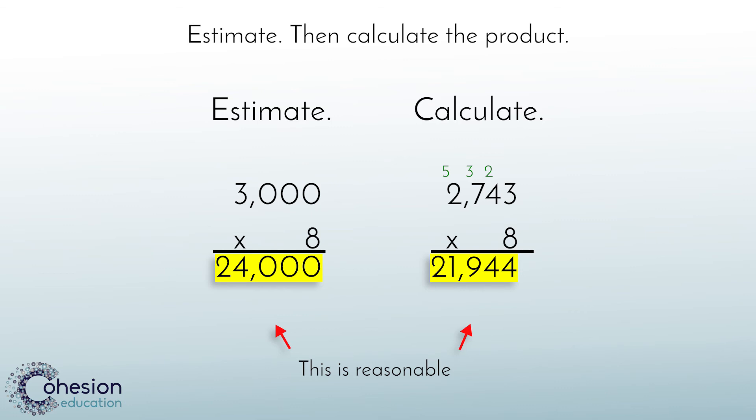This problem shows that it is important to rely on what we know about place value when working through each step of the problem. It is also very important to always remember to add the regrouped numbers to our answers before moving on to the next place value.